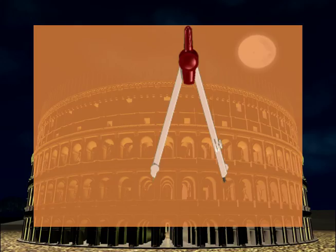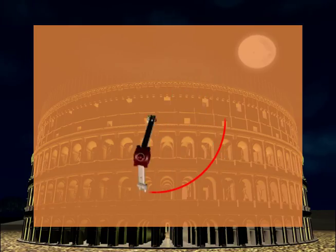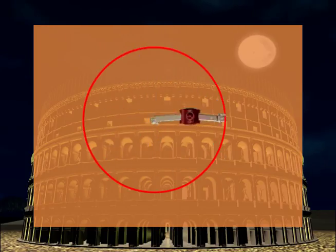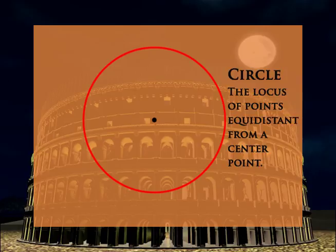As you have seen, constructing a circle is easy. Take a compass, define a center point, and sweep out a circle. A circle is the locus of points equidistant from a center point.